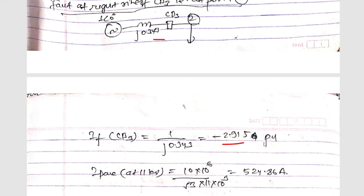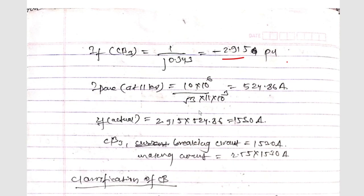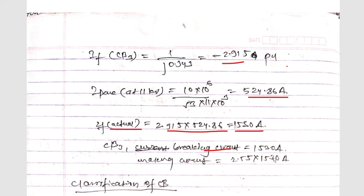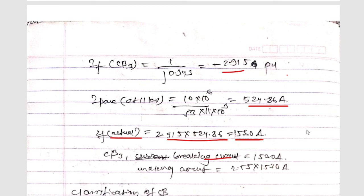With only G2 considered, the reactance is j0.343, so fault current = 1 / j0.343 = 2.915 per unit. Base current at 11 kV = 524.86 ampere. Actual fault current = 2.915 × 524.86 = 1530 ampere. Breaking current = 1530 ampere, and making current = 2.55 × 1530 ampere. In this way you can calculate such types of numericals. Hope you enjoy the lecture — thanks for watching and please don't forget to subscribe!